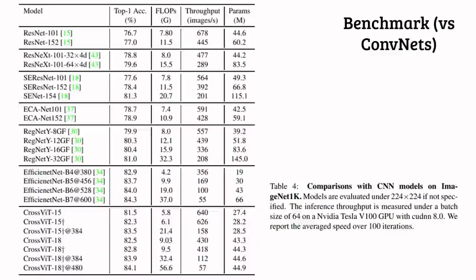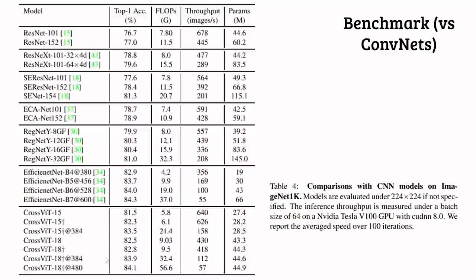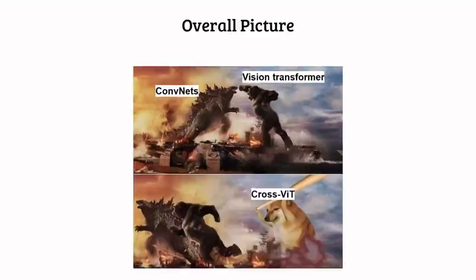The model outperforms the small models of all the other variants of the vision transformer models, with comparable FLOPs and less than 100 million parameters. This demonstrates the strength of using multi-scale representations. It also outperforms typical convolutional networks by a large margin of accuracy with comparable FLOPs. At the bottom of this figure, we also see that they attempted to increase the embedding size of the large branch. The result is a 0.2% accuracy improvement with the cost of a two-fold decrease in FLOPs, which is not good.